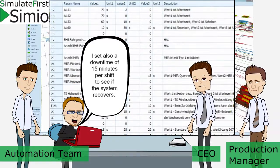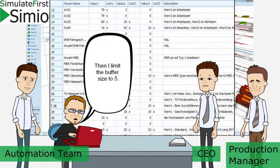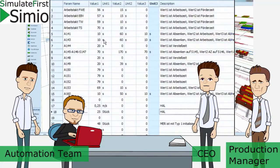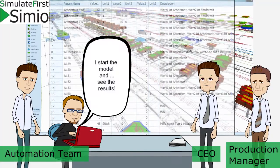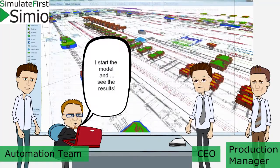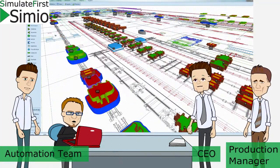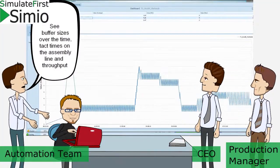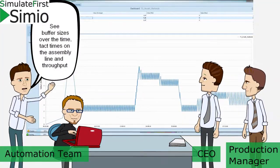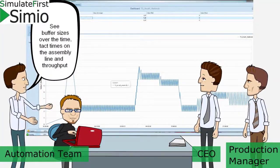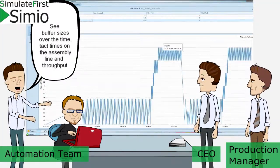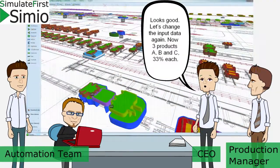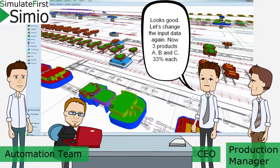I also set a downtime of 15 minutes per shift to see if the system recovers. Then I limit the buffer size to 5. I start the model and see the results — buffer sizes over time, takt times on the assembly line, and throughput. Looks good!